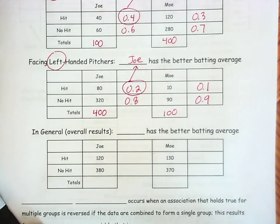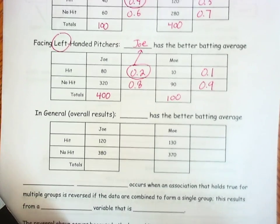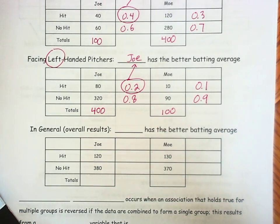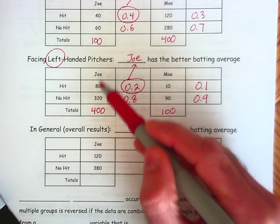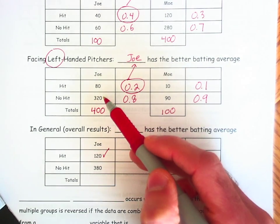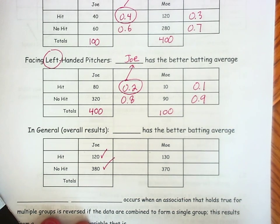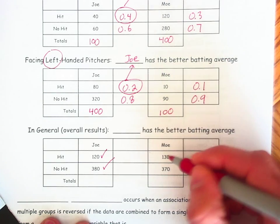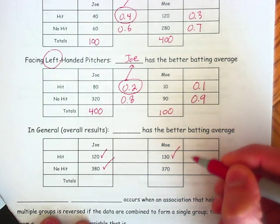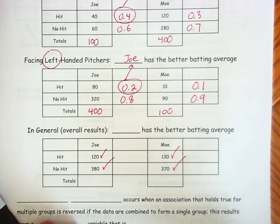Now, something to think about if we look at their batting results overall — ignoring the handedness of the pitcher. Let's look at how these data were calculated. In total, Joe has made 40 plus 80, or 120 total hits. That means he has 60 plus 320, so 380 at-bats where he does not achieve a hit. For Mo, 120 plus 10 gives him a total of 130 hits, and 280 plus 90 adds up to 370 at-bats where he does not make a hit.